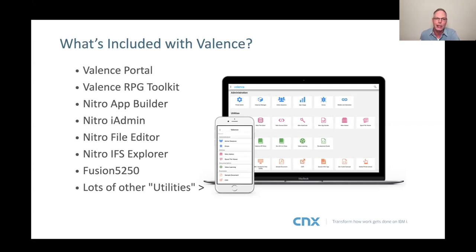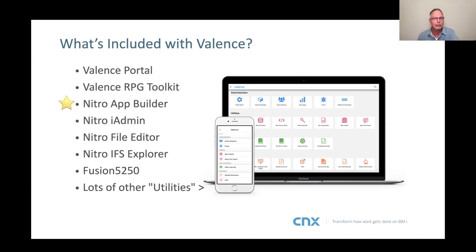There are a lot of other utilities and features not listed, like Excel generation, PDF, and spool file viewers for users. Everything can be done through the web interface. I put a star next to the Nitro App Builder because that's the tool we're going to use today, and it really is the feature within Valence that drives most of our sales. What drives customers to look at Valence is really the Nitro App Builder — they need to create good modern applications quickly and efficiently.